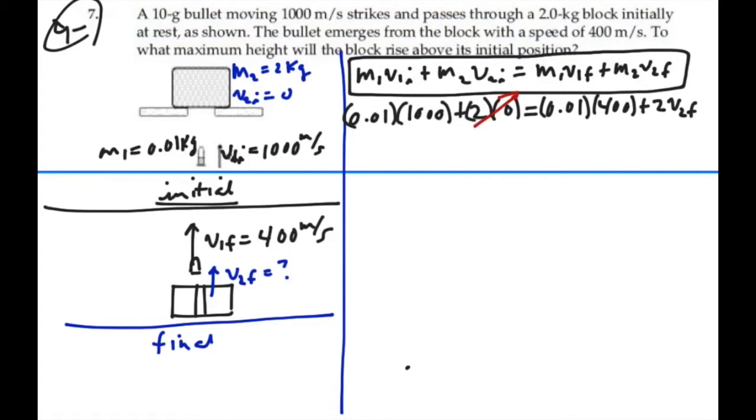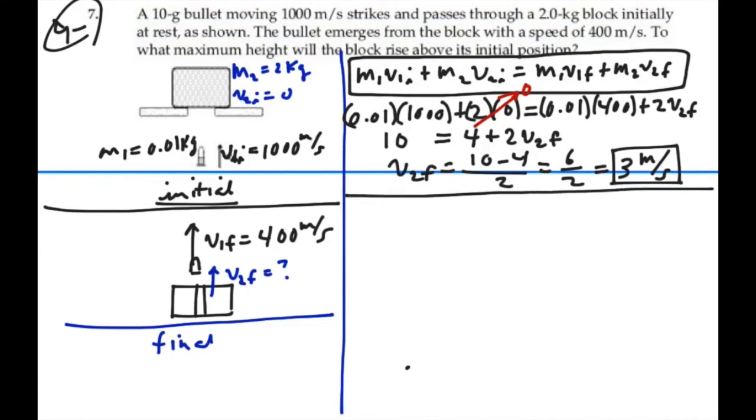Realize that 2 times 0 is 0. So we have 1,000 times .01, which will give me 10, is equal to 400 times .01 is 4, plus 2 times v2 final. So v2 final will equal 10 minus 4, divided by 2, which will be 6 divided by 2, or 3 meters per second. So that is the final velocity of the block right after the collision.